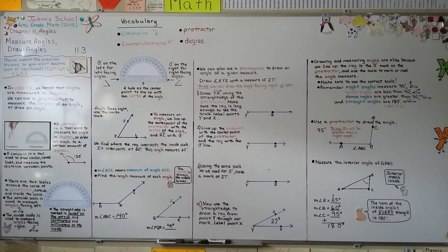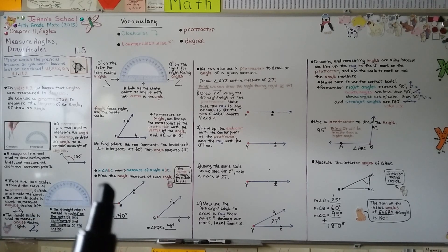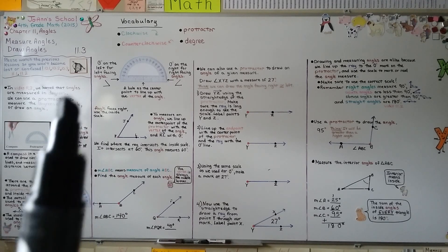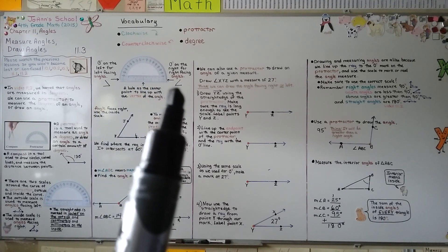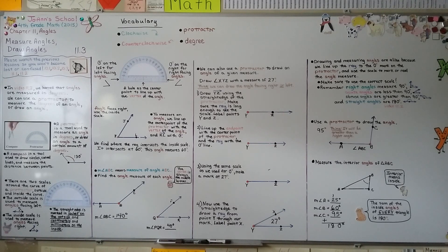Be careful when measuring or drawing angles — make sure you're using the correct scale, inside or outside. If the angle is opening to the left, use zero on the left side; if it's opening to the right, use zero on the right side. Our next lesson, 11.4, will cover joining and separating angles and finding measures of angles separated into parts. I hope to see you there, and I hope you're having a great day!